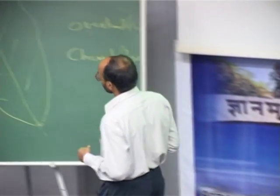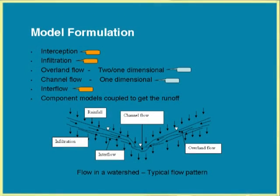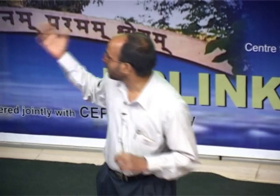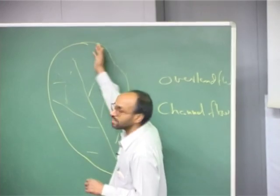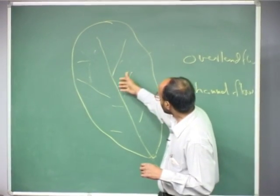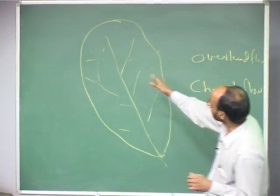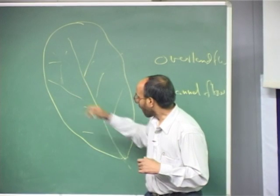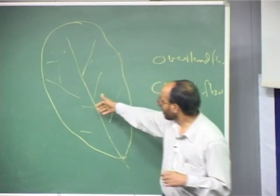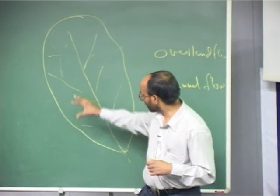There are a number of processes taking place in a watershed with respect to rainfall: infiltration, interception, interflow, and many other hydrologic processes. Some of these important processes are considered in this model — like interception and interflow — and by considering all these aspects we have developed a composite model. For a short rainfall event of a few hours, evaporation is very small compared to infiltration, interflow, and interception, so evapotranspiration is not considered in the present model since it will be a very small percentage of the total losses.